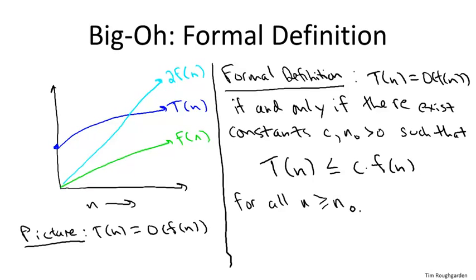So going back to the picture, what are C and n naught? Well, C of course is just going to be two, and n naught is the crossing point. So if we look at where two F of n and T of n cross, and then we draw up the asymptote, this would be the relevant value of n naught in this picture.